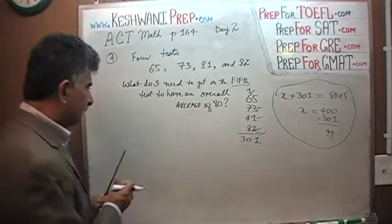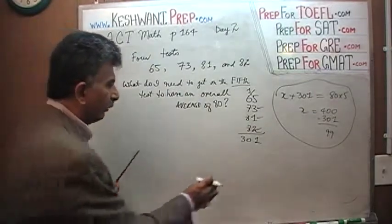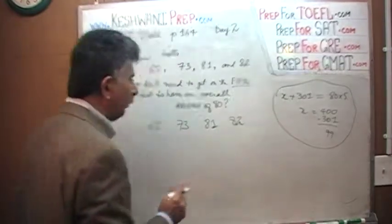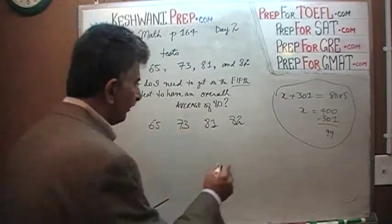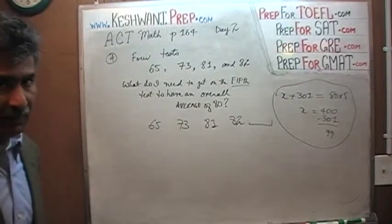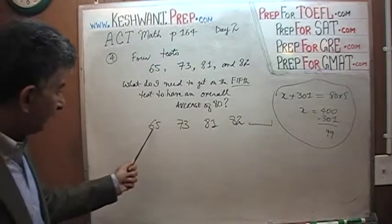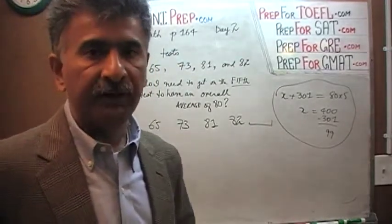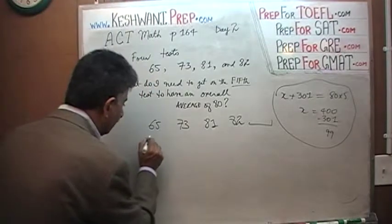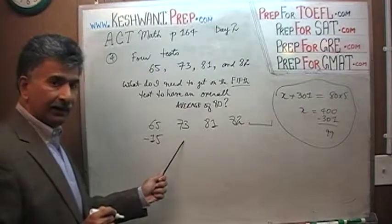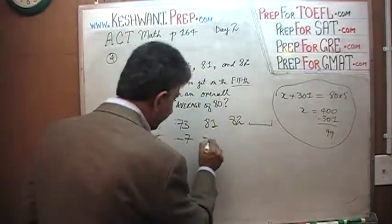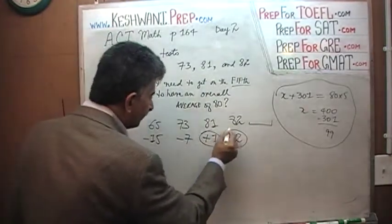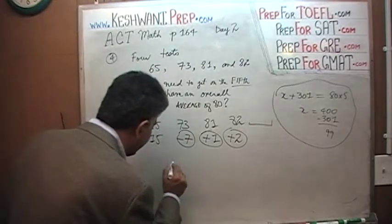In the quick and dirty approach I'm going to show you, we don't have to figure out the sum. There are four scores: 65, 73, 81, and 82. I want the overall score of 80. Did I get 80 on the first exam? No, I was 15 points short. I have a deficiency of 15 points. Did I get 80 here? No, I have a deficiency of 7 points. Did I get 80 here? I have a surplus of 1. Did I get 80 here? I have a surplus of 2. Watch what happens: 1 plus 2 is 3, 3 minus 7 is negative 4, and negative 4 and negative 15 is negative 19.